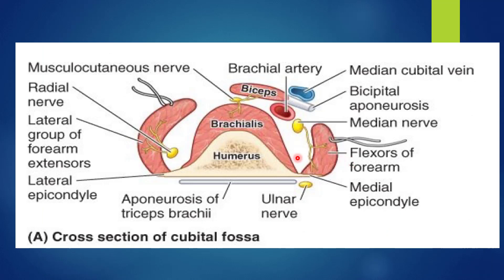This is a cross-section of the cubital fossa. This is the humerus, here is the medial epicondyle and this is the lateral epicondyle. The medial epicondyle gives origin to all flexors of the forearm, and the pronator teres forms the medial boundary of the cubital fossa.